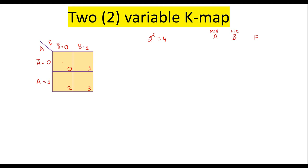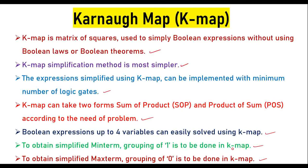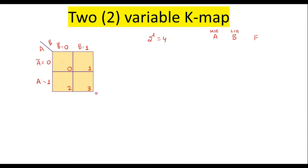Now let's see how to simplify a Boolean expression having two variables using a two-variable KMAP. To obtain simplified minterms, grouping of ones is to be done in the KMAP. Grouping of ones is done with respect to minterm expressions, and grouping of zeros is done with respect to maxterm expressions.